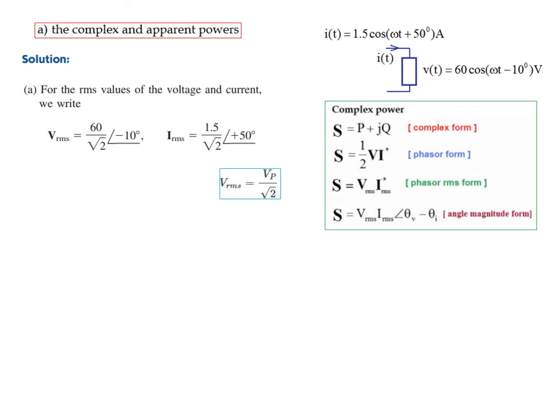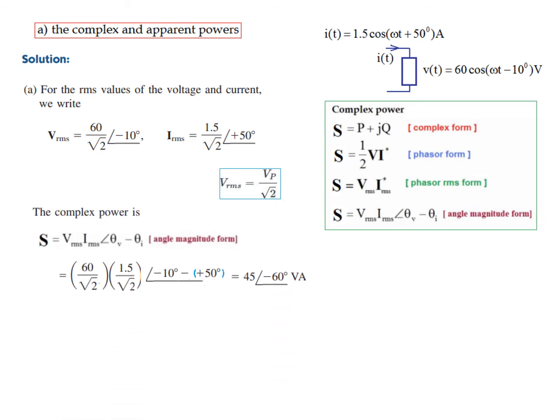We can solve using two of the formulas. First we try the angle-magnitude form: write the voltage magnitude multiplied by the current magnitude, and the angle is θ_V minus θ_I, which is −10 minus (+50) = −60°. So the complex power S = 45∠−60°.